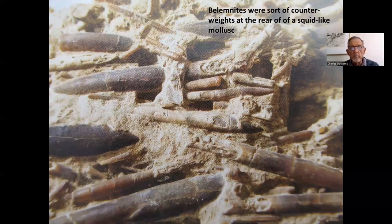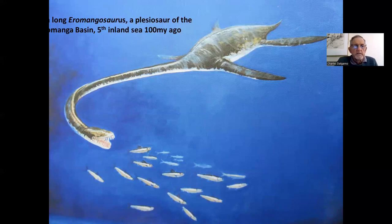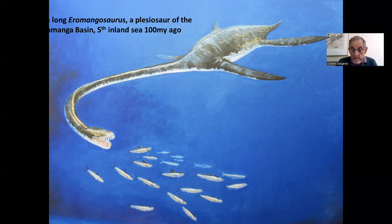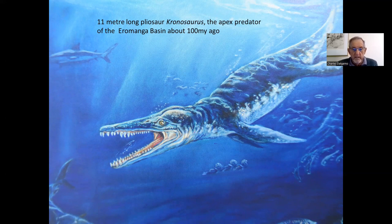Also significant are belemnites, which were supporting structures for squid-like mollusks. These are extremely abundant, particularly in the Toolebuc Formation and some other units. In the marine beds we expect plesiosaurs, and some fine remains have been discovered, even some partly opalised — with better occurrences possibly in Queensland than in South Australia. The pliosaur Kronosaurus was apparently the apex predator of the Eromanga Basin seas about 100 million years ago.